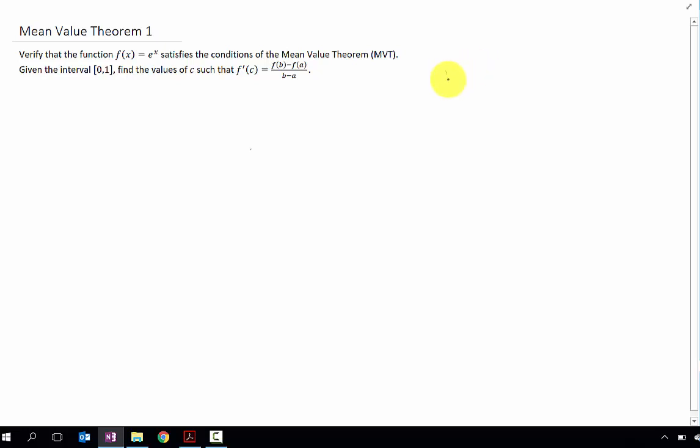So the quickest and simplest description of the mean value theorem that I can give is that if you have a function, and unlike Roll's theorem, this time your two y values don't have to be the same,